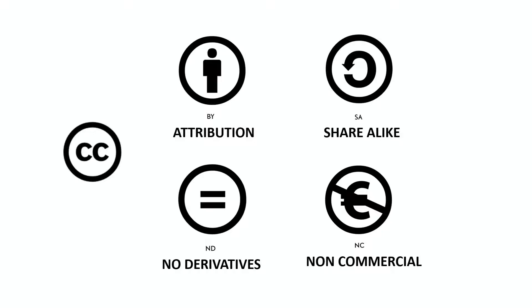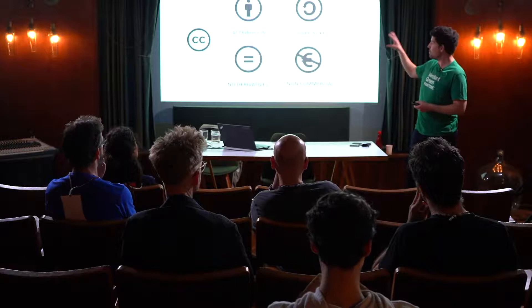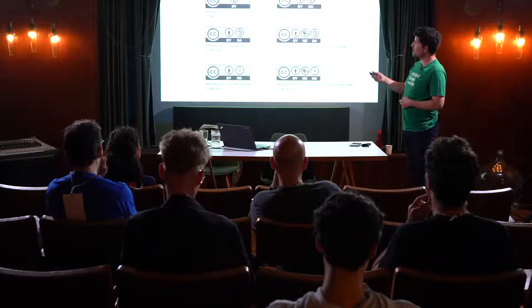Creative Commons licenses are called universal because they were translated into different languages and also into different legal frameworks around the world, so they can be used in court to defend the use of a work. The licenses are created around four icons: attribution (you need to credit the creator), share alike (same icon as copyleft), no derivatives (you can use the work but make no modifications), and non-commercial (you can use the work but cannot take any commercial advantage). By combining these four icons you can have the six licenses.